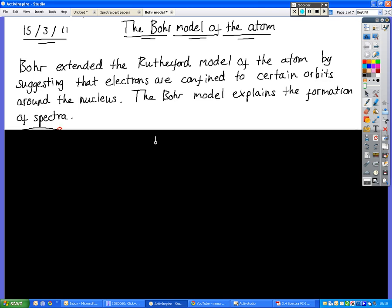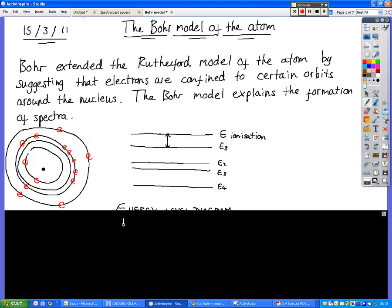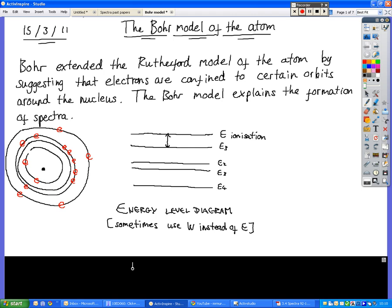So the Bohr model set out to explain why there was so much empty space. If all that empty space is there, why is it there? Why do the electrons need that empty space? Niels Bohr came up with his Bohr model of the atom, and his model really said that the electrons inhabit a certain energy level from the nucleus, and that can be represented in an energy level diagram.